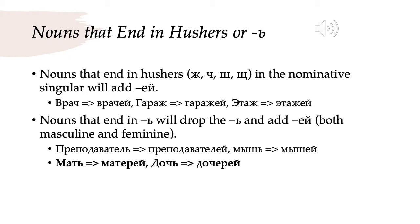So we have, for instance, преподаватель, college instructor, becomes преподавателей. Мышь, a mouse — both the animal and a computer mouse — becomes мышей. And note that мать, mother, becomes матерей, and дочь, daughter, becomes дочерей. As always, when we add an ending to these two nouns, the -ер- suffix appears.